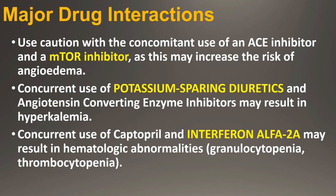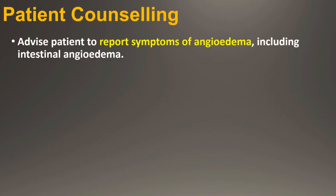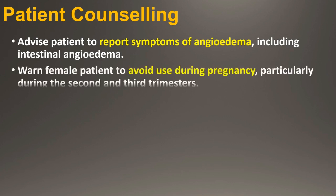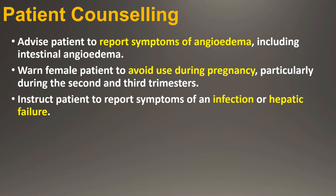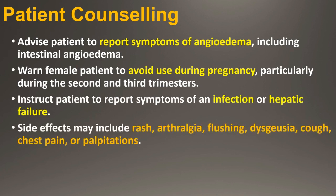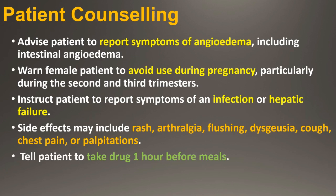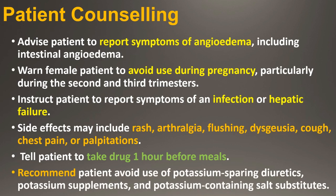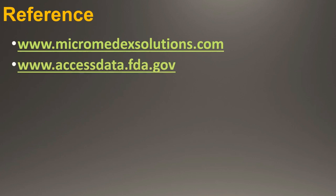Patient counseling: Advise patients to report symptoms of angioedema including intestinal angioedema. Warn female patients to avoid use during pregnancy, particularly during the second and third trimesters. Instruct patients to report symptoms of infection or hepatic failure. Side effects may include rash, flushing, cough, chest pain or palpitations. Tell patients to take the drug one hour before meals. Recommend patients avoid use of potassium-sparing diuretics, potassium supplements, and potassium-containing substitutes. Thank you — do subscribe to the channel for more videos.